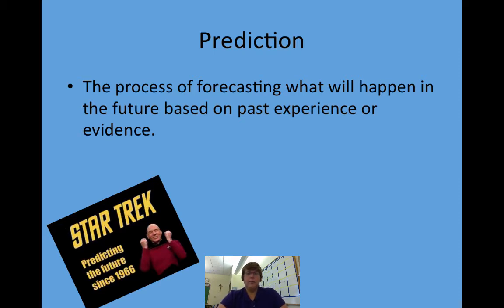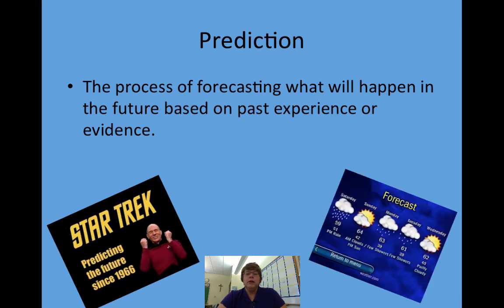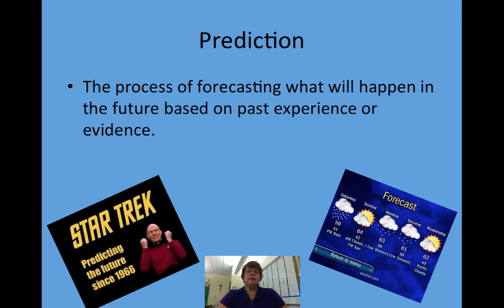Prediction is the process of forecasting what will happen in the future based on past experiences or evidence. For example, if you wanted to know what the weather was going to be, you would look at weather data from a few days before. Just like the picture about Star Trek predicting the future since 1966 — the Star Trek creators looked at things that were going to happen in the future and put those in their show.